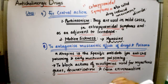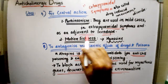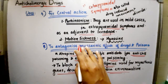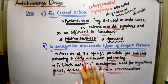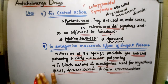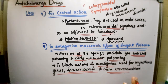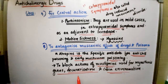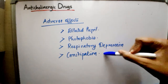For central action, anticholinergics are used to treat mild cases of parkinsonism, extrapyramidal symptoms, and as an adjuvant to levodopa. They are used to treat motion sickness, with hyoscine being the most effective drug, acting centrally. Atropine is the specific antidote for anticholinesterase poisoning and early mushroom poisoning, and blocks the muscarinic effects of neostigmine used in myasthenia gravis, decurarization, and cobra envenomation. Adverse effects include dilated pupil, photophobia, respiratory depression, and constipation.